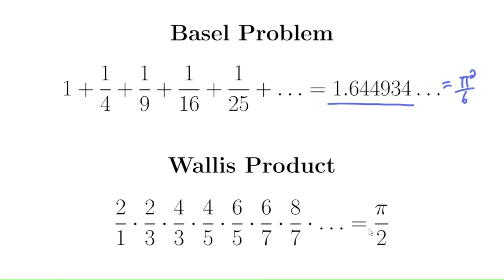Now this formula was known in Euler's time, but it ends up falling right away from how he factored sine. So what was Euler's insight into factoring sine? How did he do it?